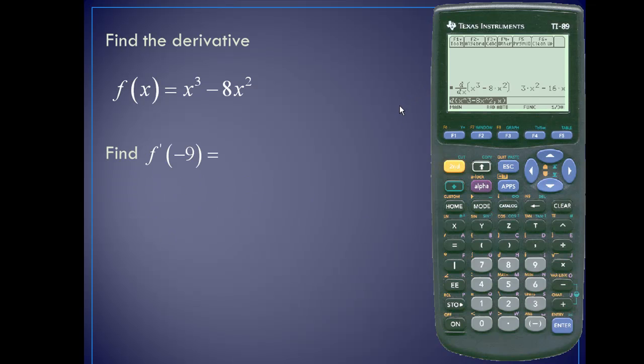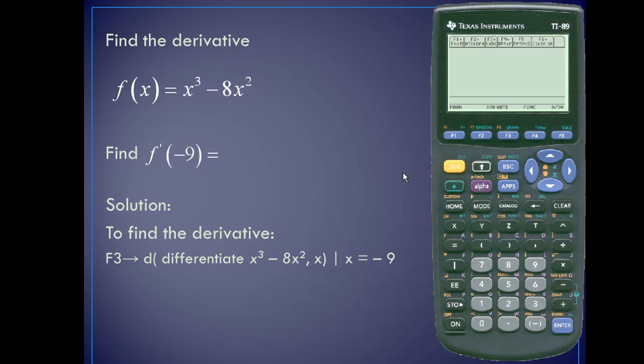Next, let's evaluate the function x cubed minus 8x square at negative 9. Here's the solution, we'll find the differentiate function. So once again, we'll press f3. The differentiate function is our first function, so I'll simply press 1. I'll input the function in once again, x raised to the third minus 8x square. I'll insert a comma.